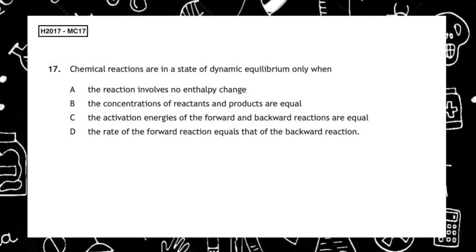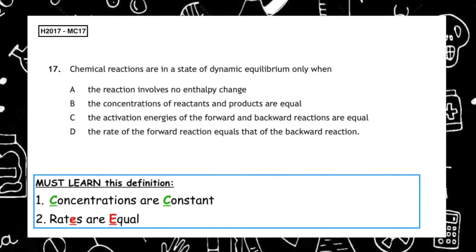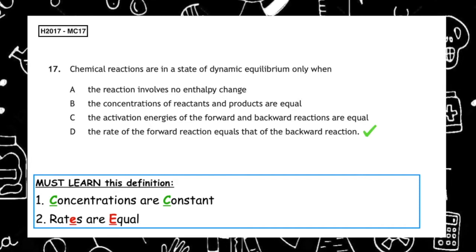This past paper question is from the Higher 2017, multiple choice 17. Chemical reactions are in a state of dynamic equilibrium only when — remember our definition — concentrations are constant or rates are equal. So the correct answer to this question is multiple choice answer D: the rate of the forward reaction equals that of the back reaction.